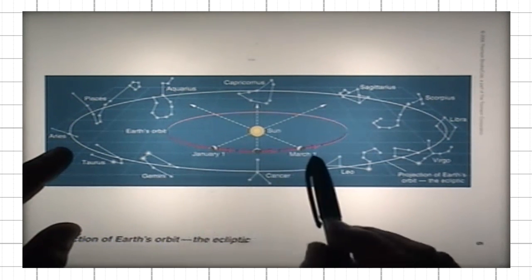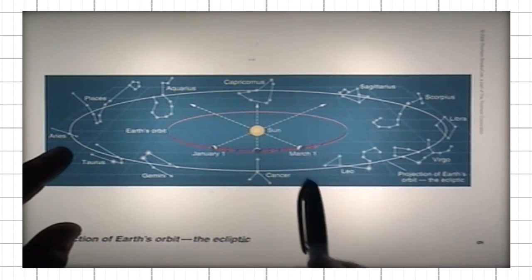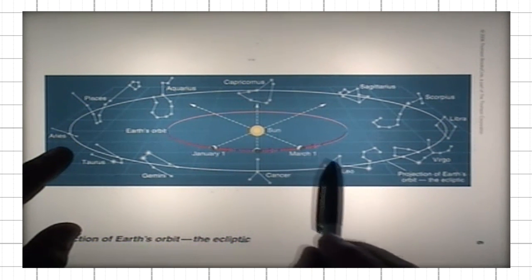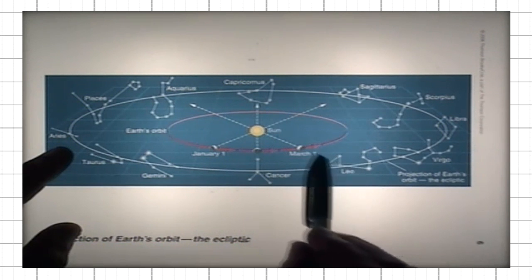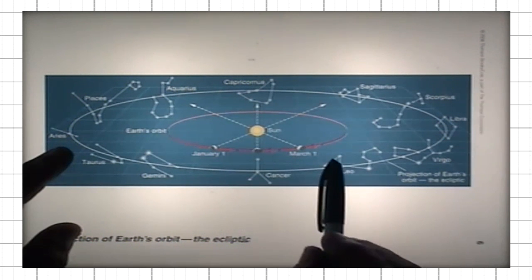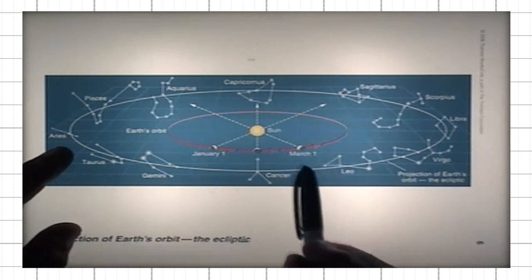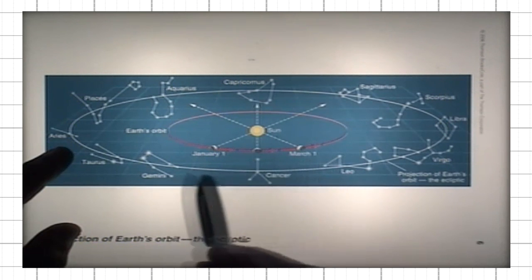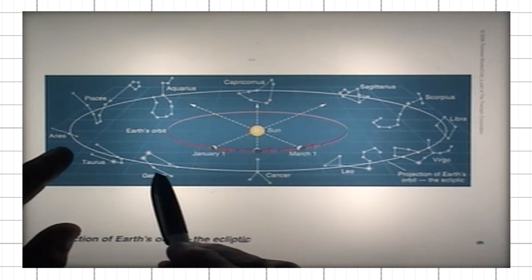Then, March 1, two months later, the constellation directly overhead would be Leo, and Gemini would fall behind.